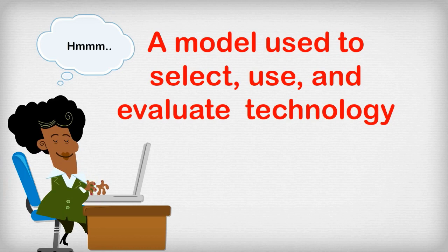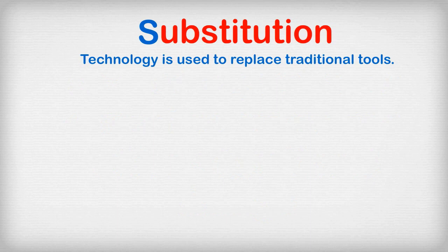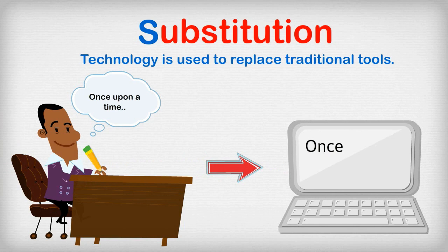S stands for Substitution. At this level, technology acts as a direct tool substitute, with no functional change. Teachers are using technology to replace traditional tools. For example, instead of having your students write out an essay by hand, you allow them to use Microsoft Word or Google Docs. The task of writing the essay is exactly the same, but the students are using a technology tool instead of a writing utensil.